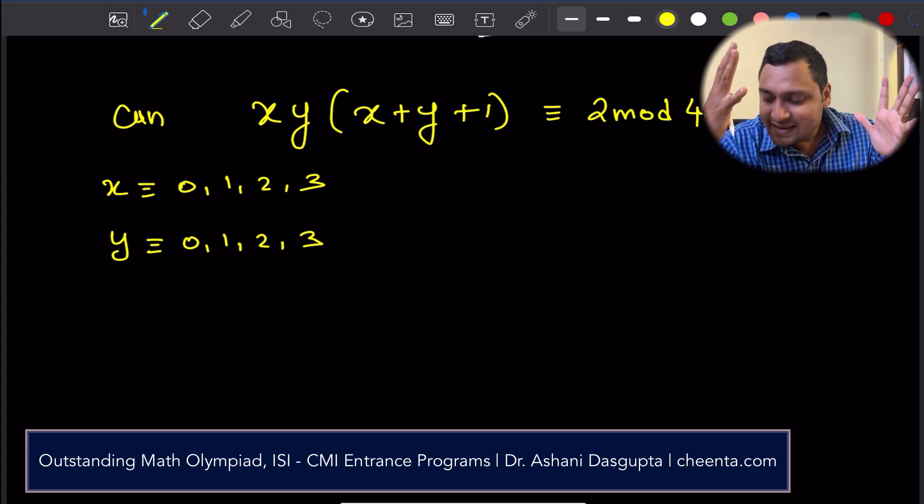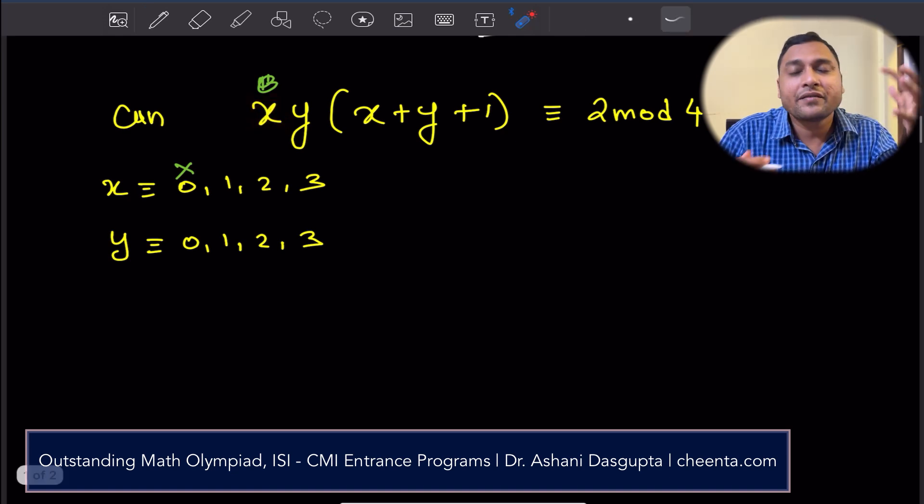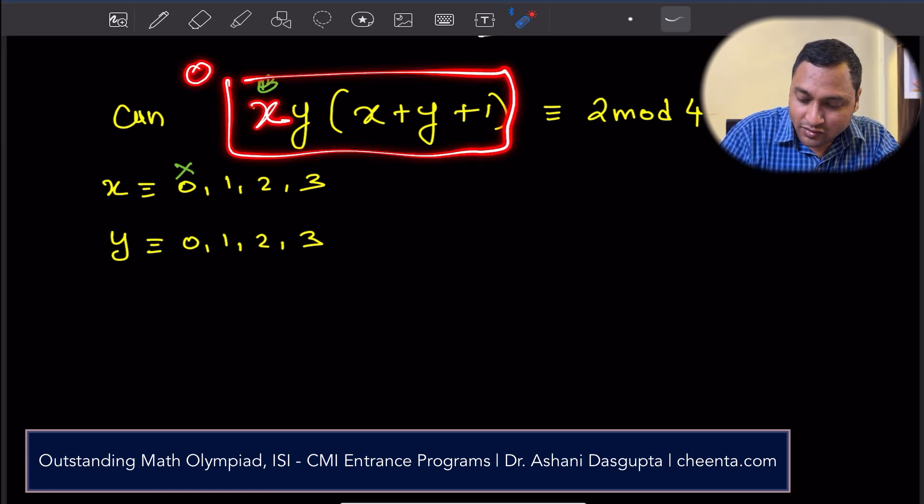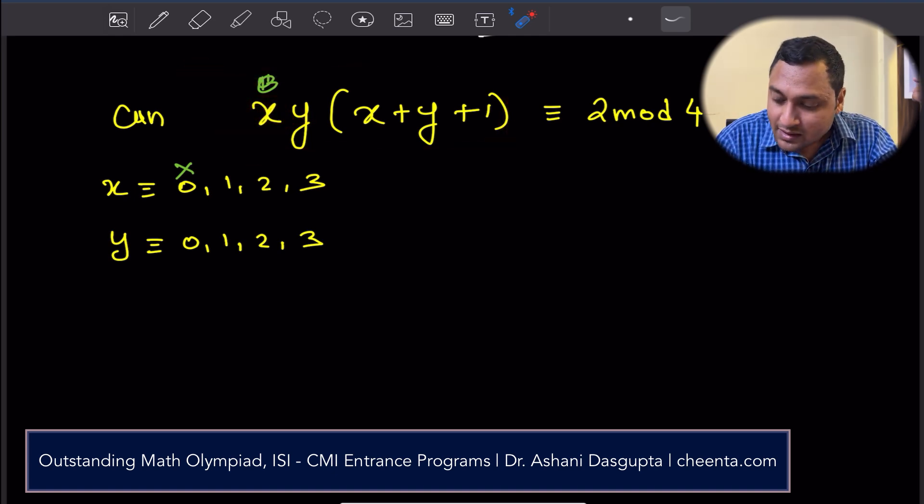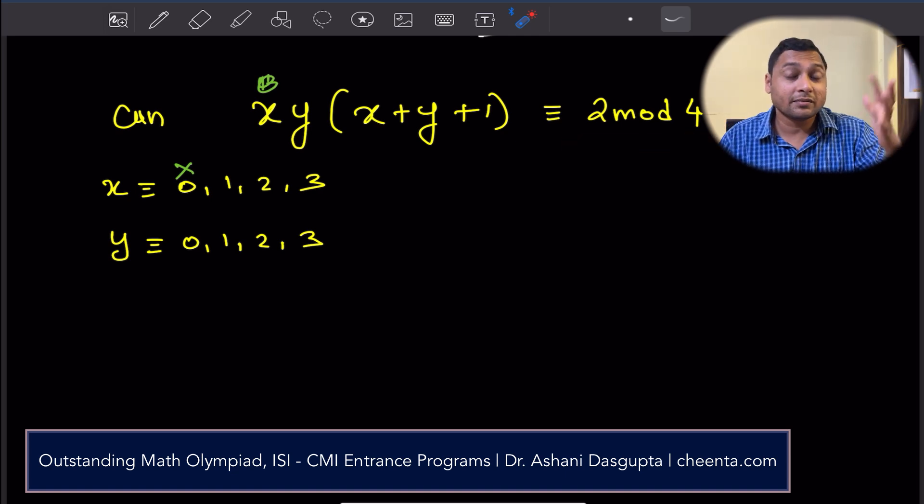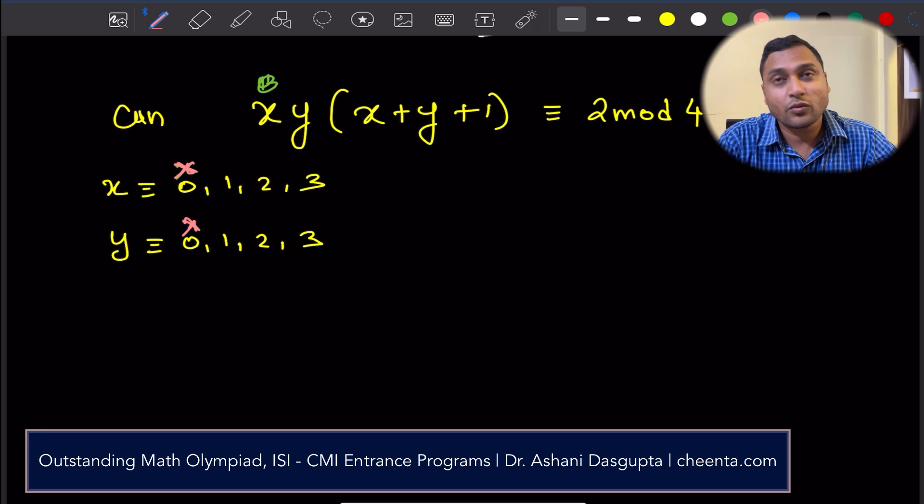First of all, notice that x cannot be 0 mod 4. So, this is not possible. Why? Because if x is 0 mod 4, then the left-hand side entirely becomes 0 mod 4. 0 times anything is 0. But the right-hand side is 2 mod 4. So, the left-hand side is 0 mod 4 or divisible by 4. The right-hand side is non-divisible by 4. So, that's not possible. So, we cannot have 0 mod 4 and Y also cannot be 0.